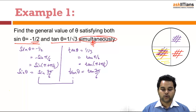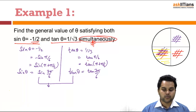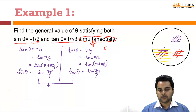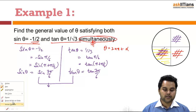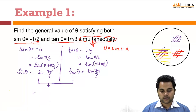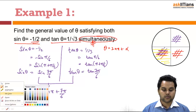Now the two equations are of the form sin θ = sin α and tan θ = tan α. We have just learnt that the solution to such equations when simultaneously solved is θ = 2nπ + α. Hence we get θ = 2nπ + 7π/6 as the solution to this example.